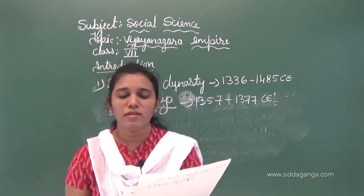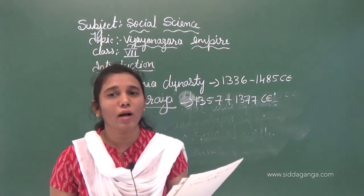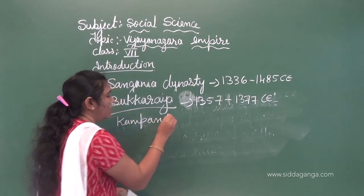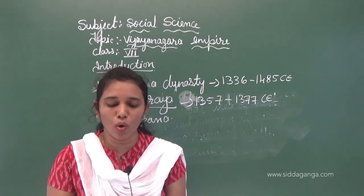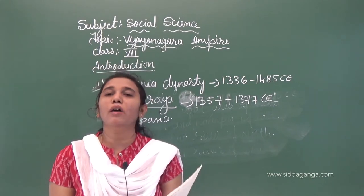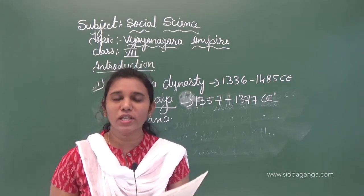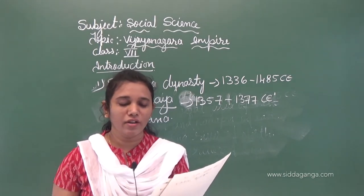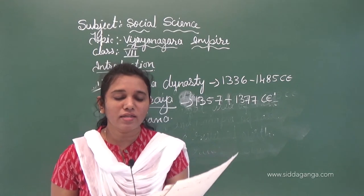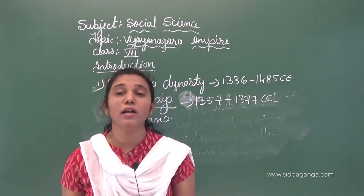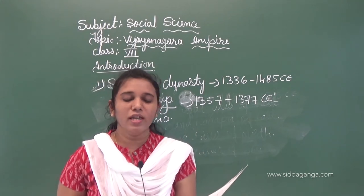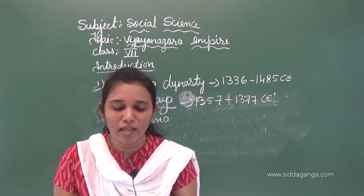During Bukkaraya's rule, his son Kampana expanded the empire by defeating the Sultan of Madurai and captured Madurai. This success was described in a book called Madhura Vijayam, written by Kampana's queen, Ganga Devi.